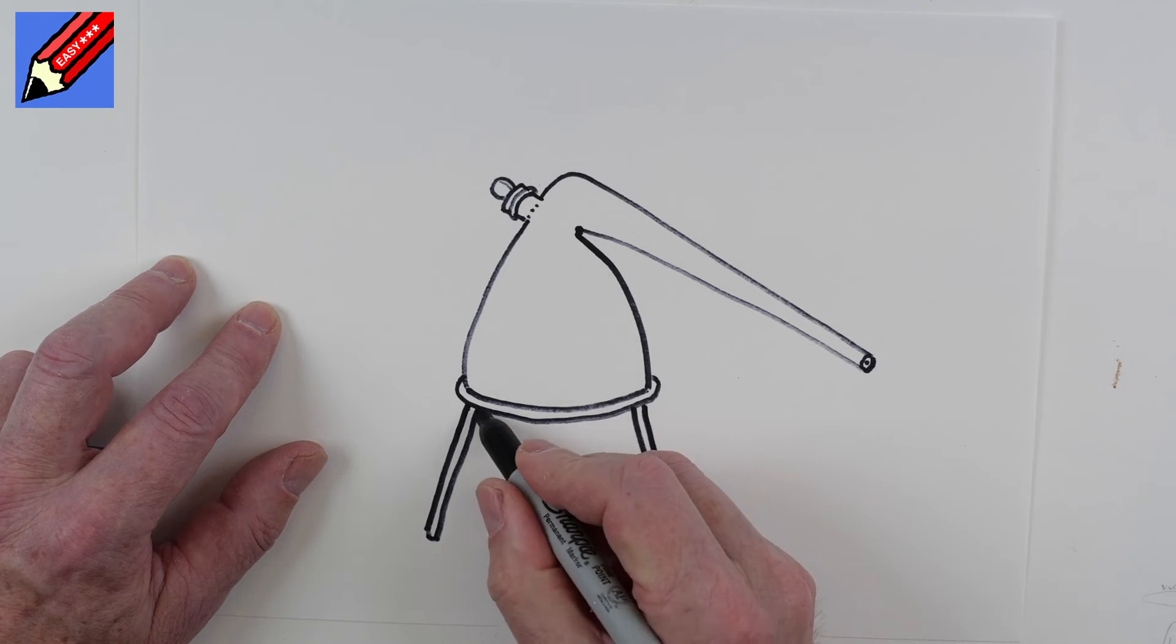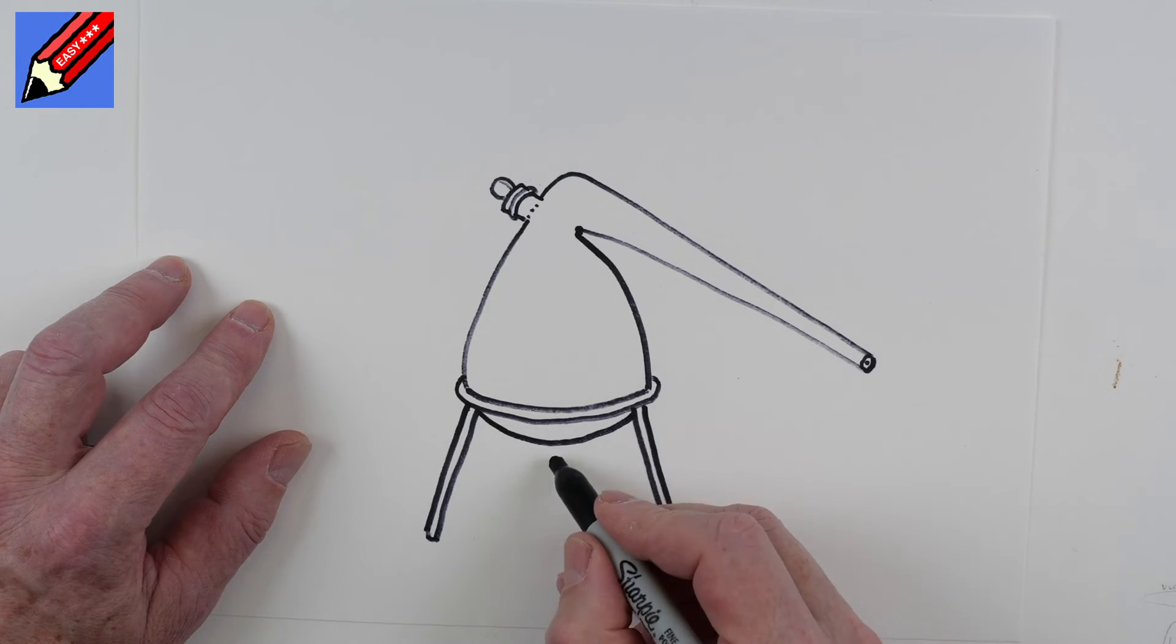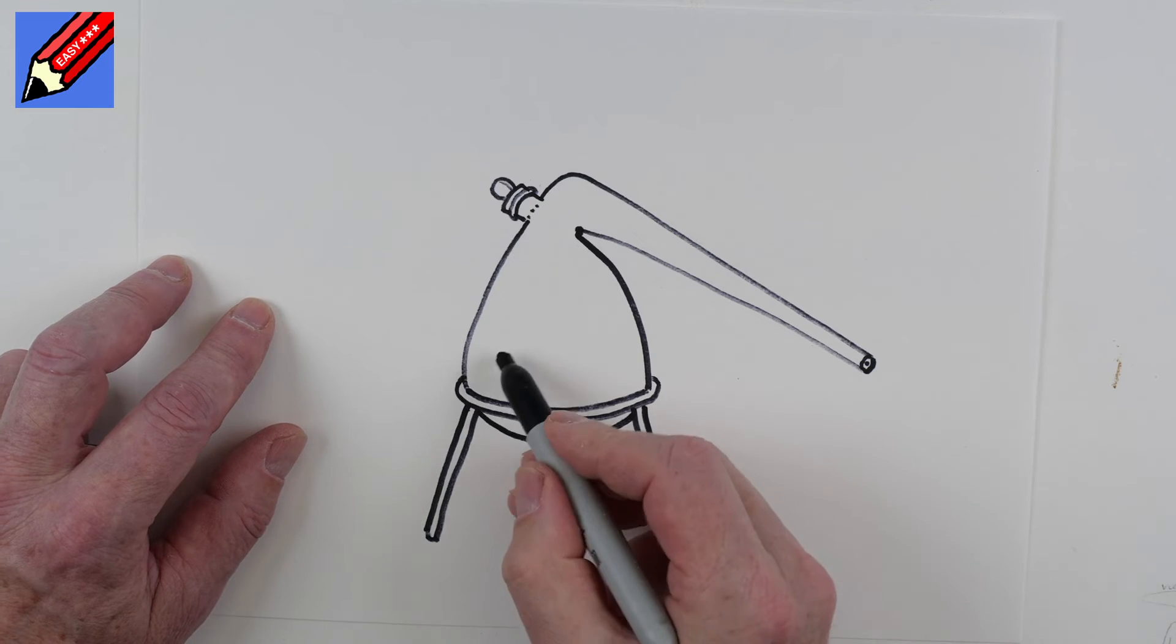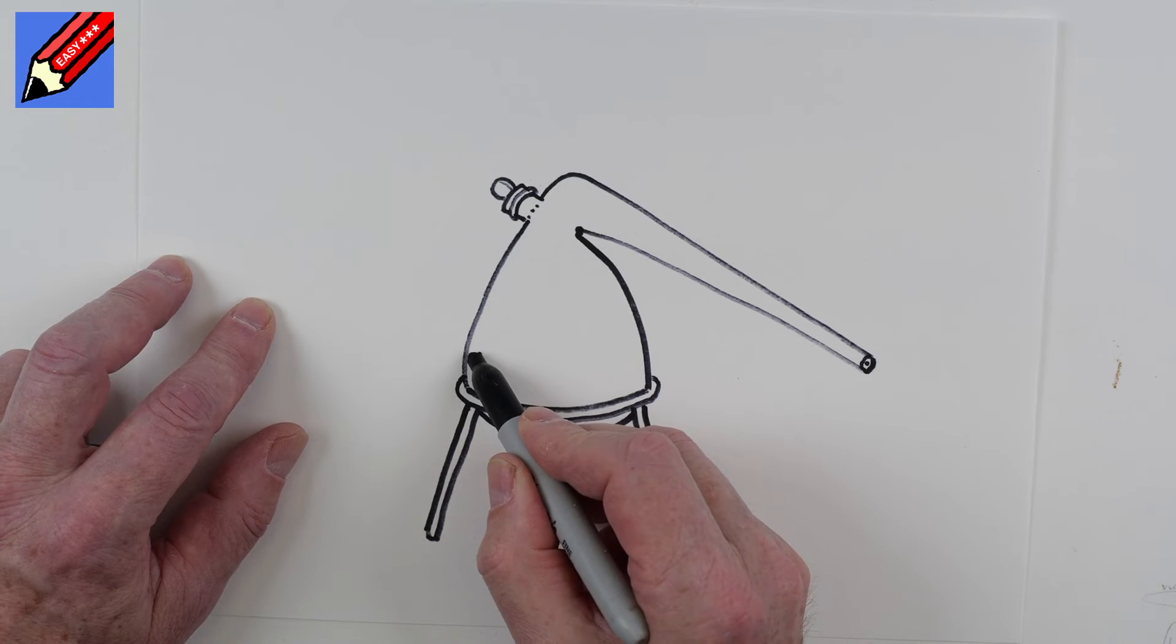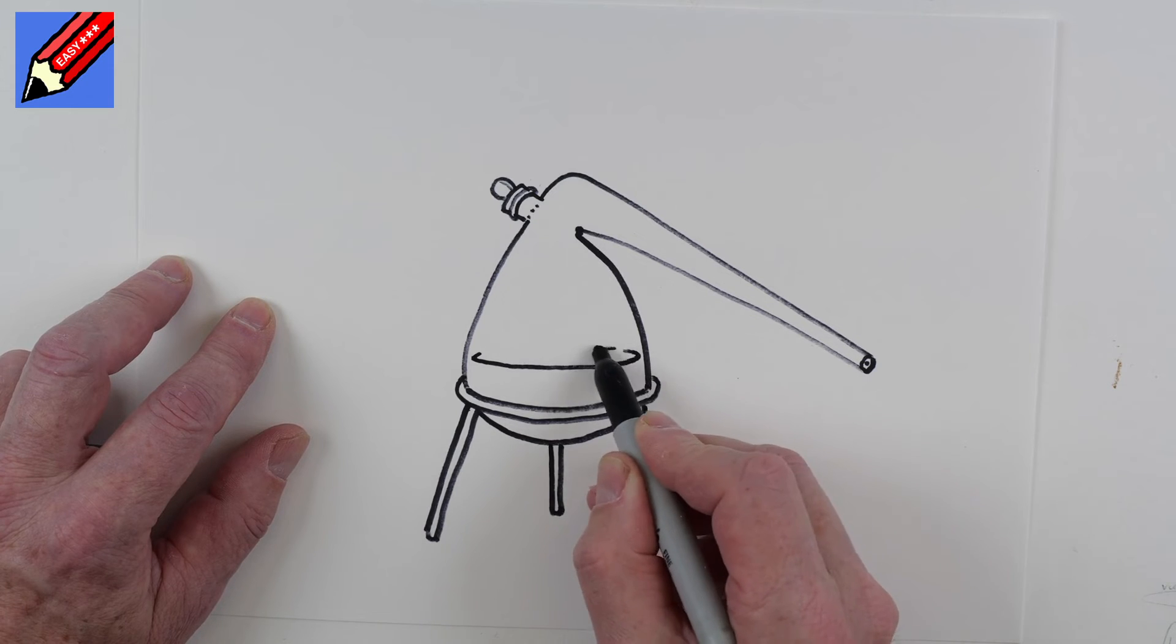that. Then we're going to have the rest of the flask coming down there and then the other leg behind there. So what you're going to have is liquid inside there which is being boiled.